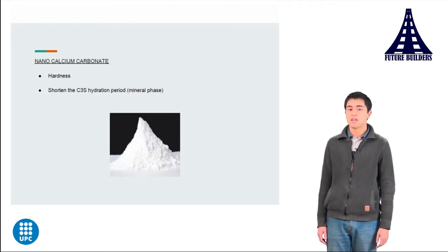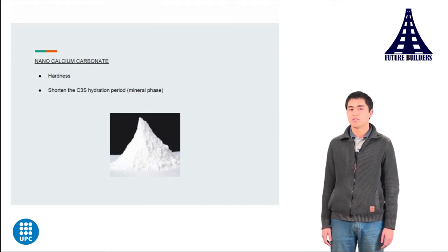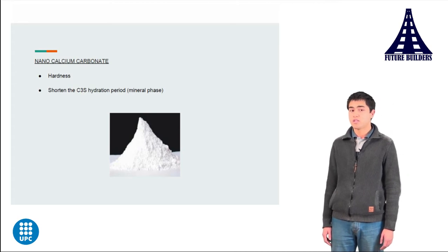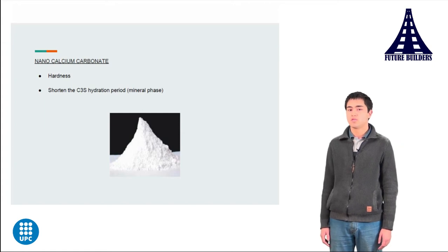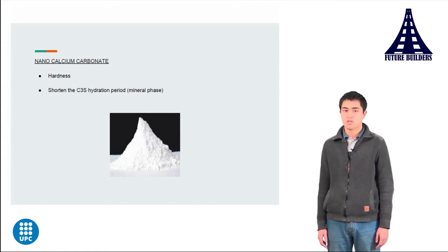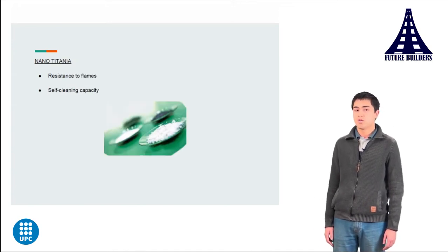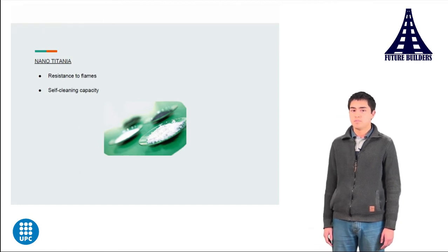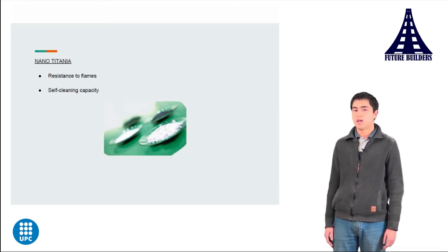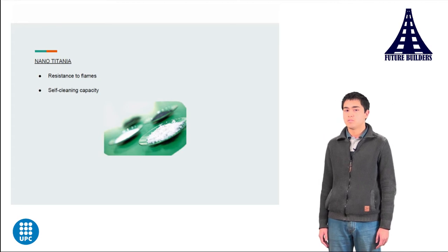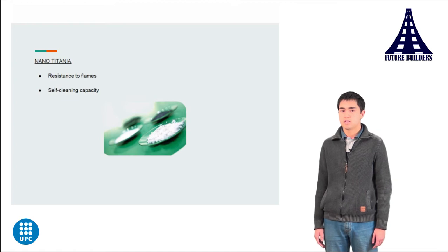The second nanotechnology is nanocalcium silicate, which increases the hardness of cement and shortens the C3S hydration period. C3S is one of the most important mineral phases in cement, also known as alite. Another one is nanotitania, which makes cement more resistant to flames and gives it a self-cleaning capacity, meaning the cement is able to repel dirt, dust, mud, etc.